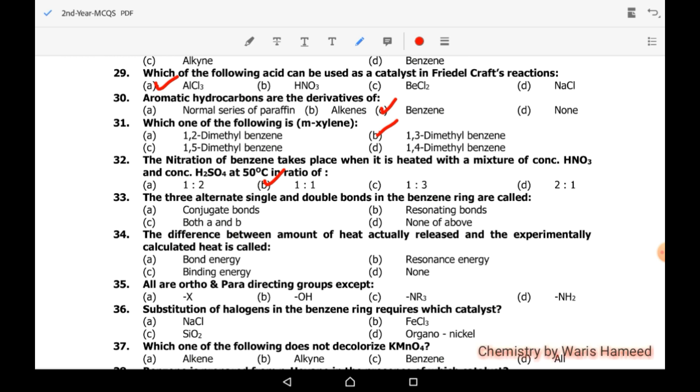The three alternate single and double bonds in benzene ring are called conjugate bonds and resonating bonds. So C is correct for this MCQs because these are also known as conjugated bonds as well as resonating bonds. The difference between amount of heat actually released and experimentally calculated heat is called resonance energy.